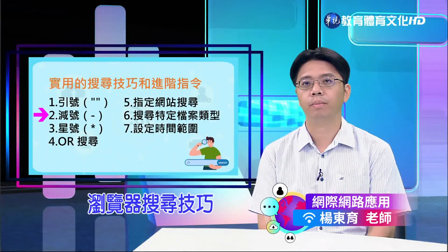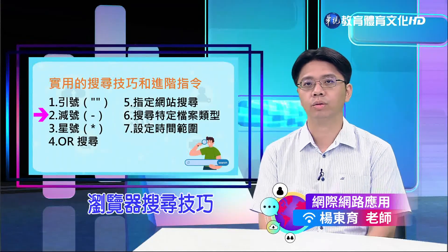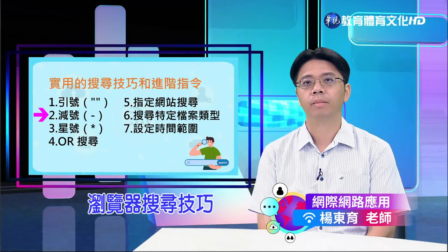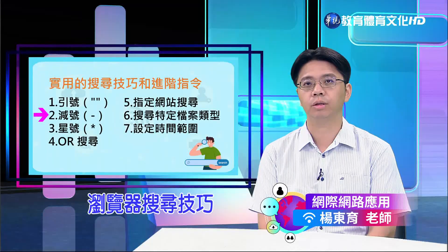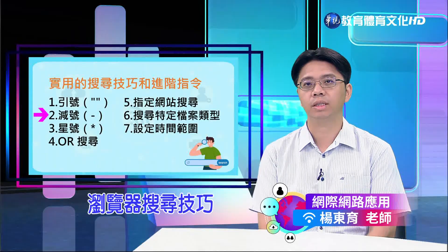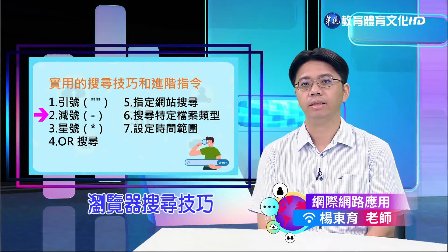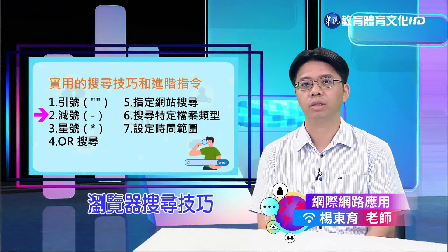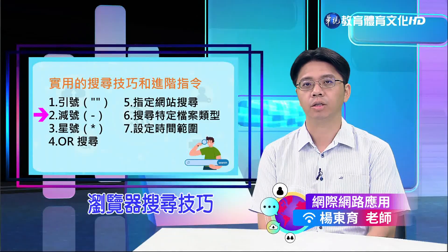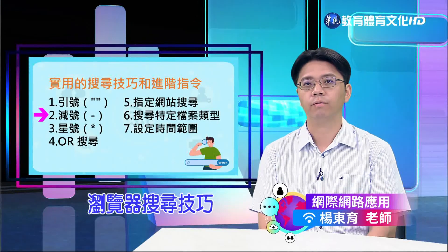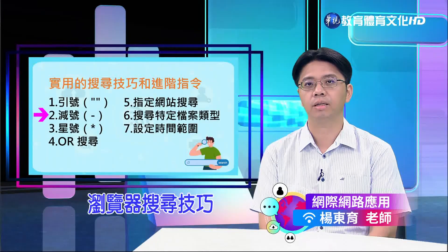第二个技巧是减号。当您想要排除某个词汇时，可以在词汇前面加上减号。这个技巧在搜寻引擎中非常实用，能够帮助您过滤掉不需要的资讯。例如搜寻「手机 -苹果」，结果只会显示与手机相关、但不包括苹果品牌的内容。若您想了解某个旅游景点的住宿选择但不包括某连锁饭店，可以搜寻「旅游景点 住宿 -某某饭店」。